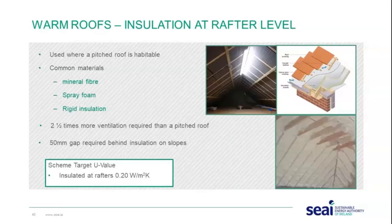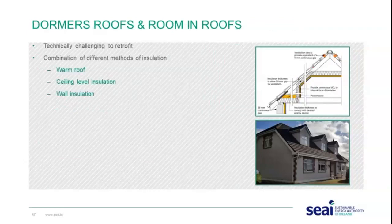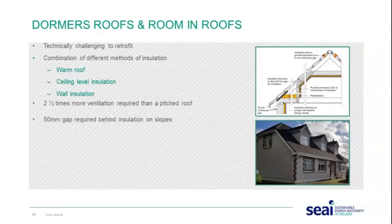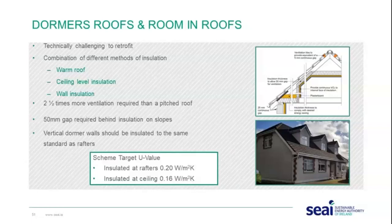Dormer roofs are also technically challenging as there are different methods for insulating at warm roof and ceiling level, with wall insulation as well. Again, two and a half times more ventilation is required than a pitched roof, with a 50 millimetre gap behind the insulation on slopes. The vertical dormer walls should be insulated to the same standards as the rafters. The scheme target U-value at rafter level is 0.20 and at ceiling level is 0.16.